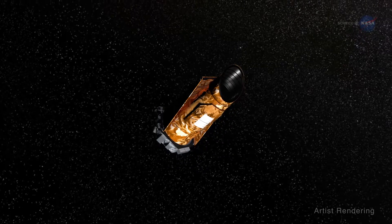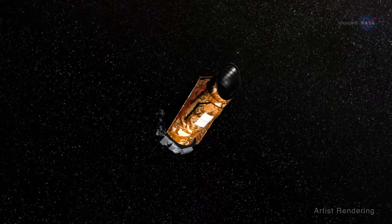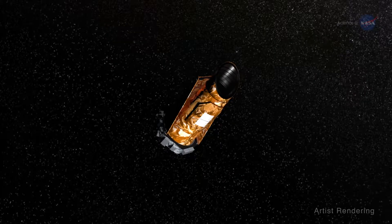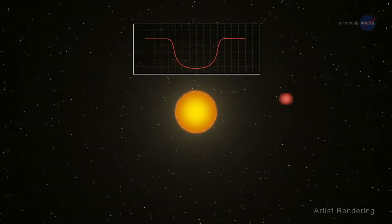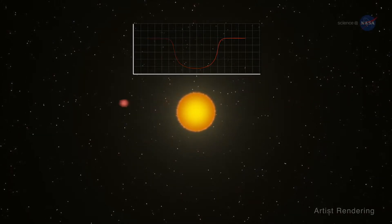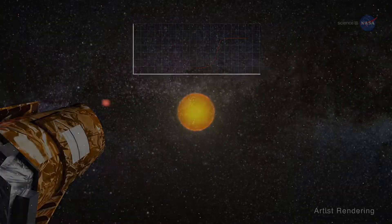Kepler is famous for finding planets. But researchers using this space-based observatory also learn a lot about stars. Kepler routinely surveys thousands of stars, looking for slight variations in brightness that signal the transit of a planet across the stellar surface.